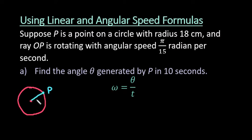The radius of this is 18 centimeters and ray OP is rotating with angular speed, so that's just telling us that our center is at the origin or O. So this ray right here is rotating with angular speed pi over 15 radians per second, and we're trying to figure out what is the angle that happens after 10 seconds.